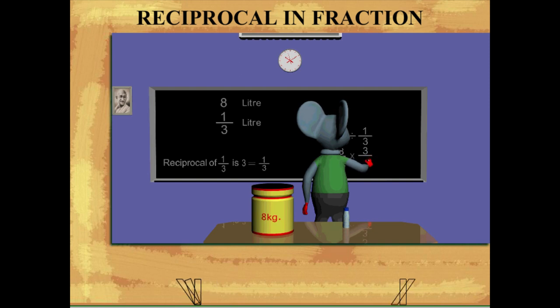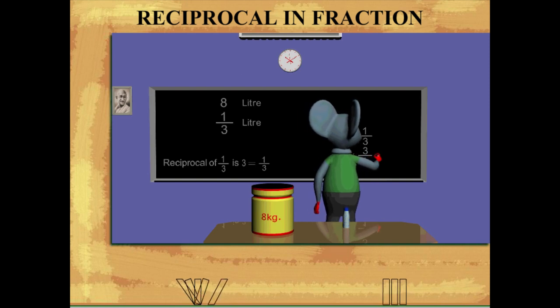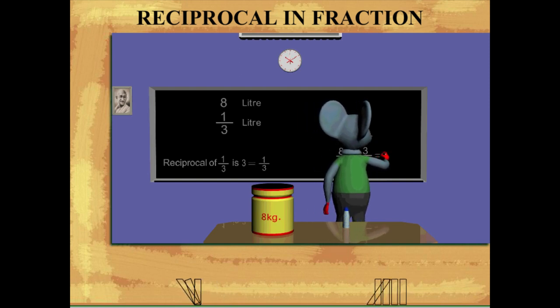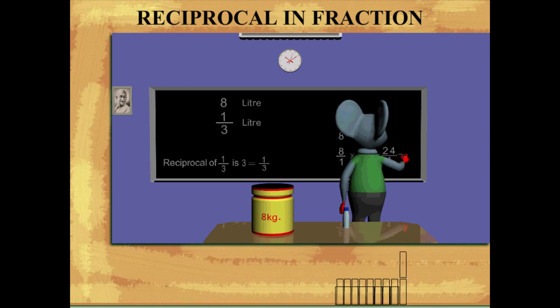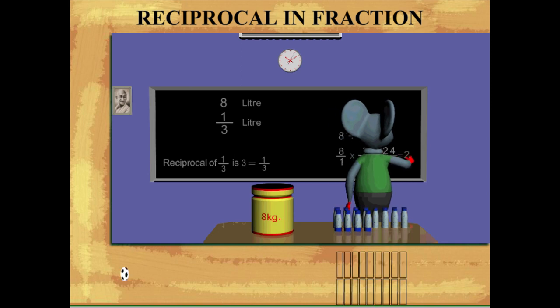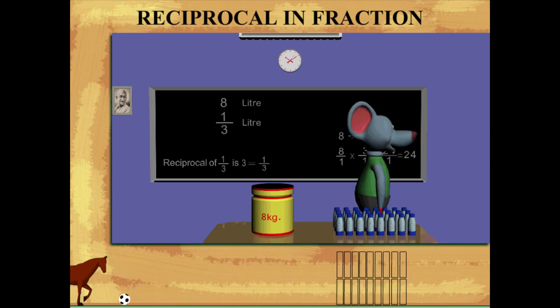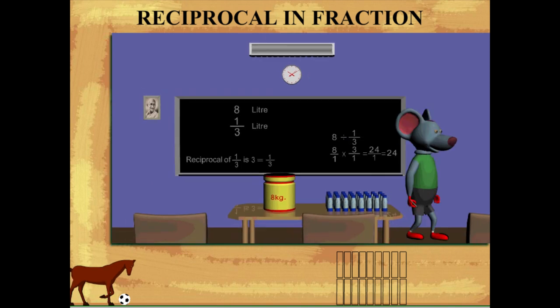He gets 8 × 3 = 24. Toby now knows he will require 24 bottles of 1/3 liters from the 8-liter oil jar.